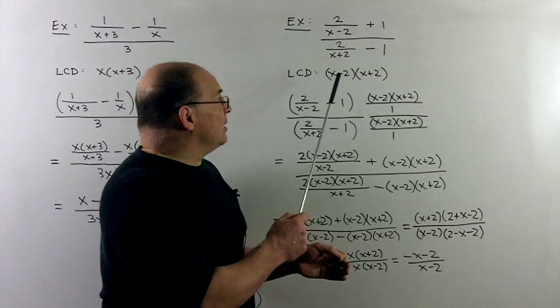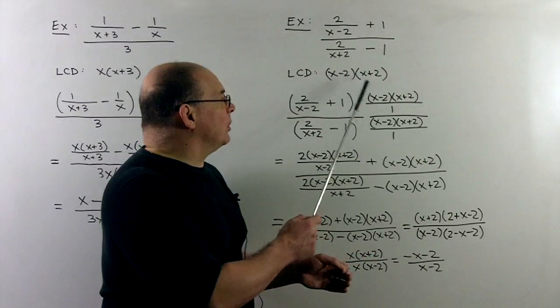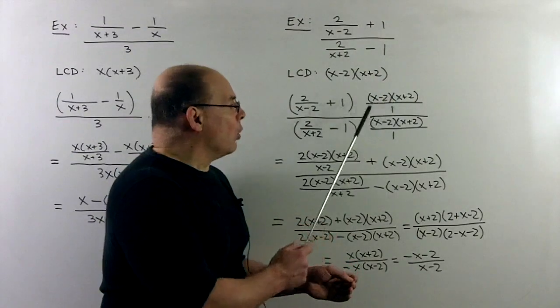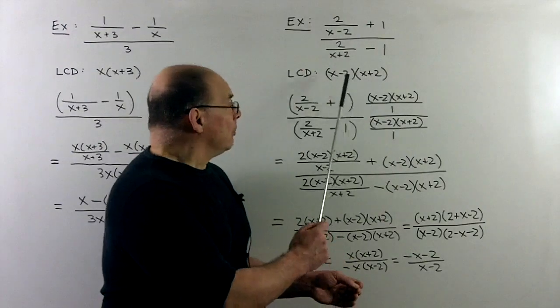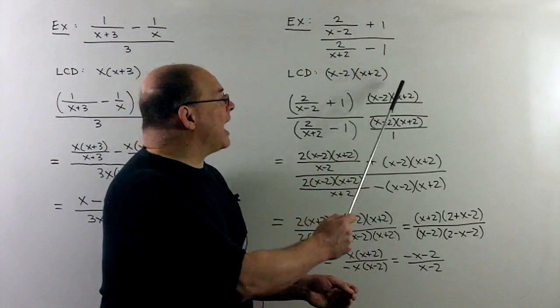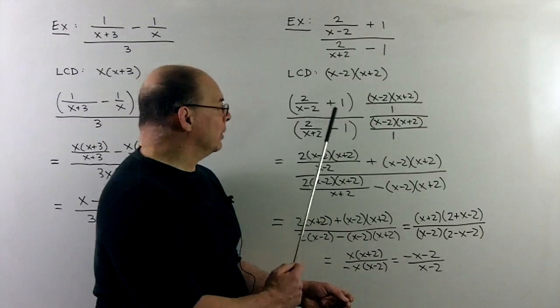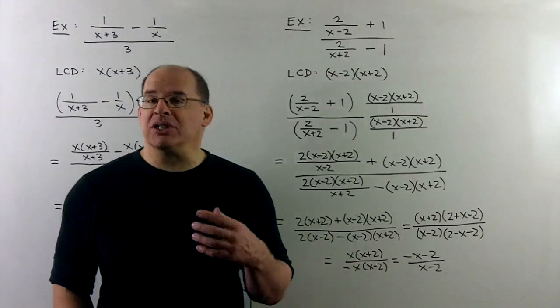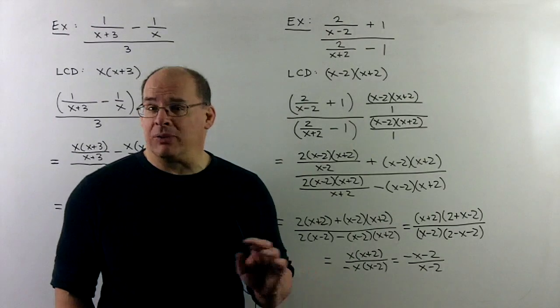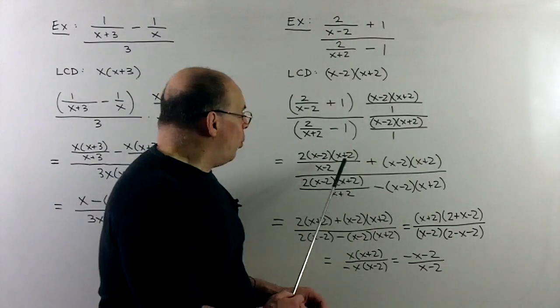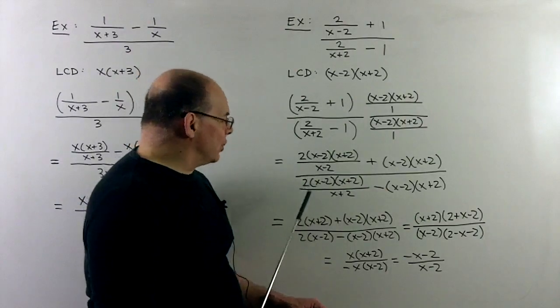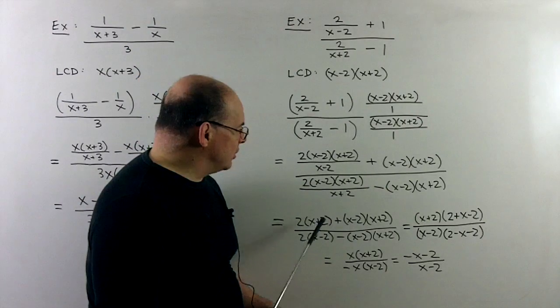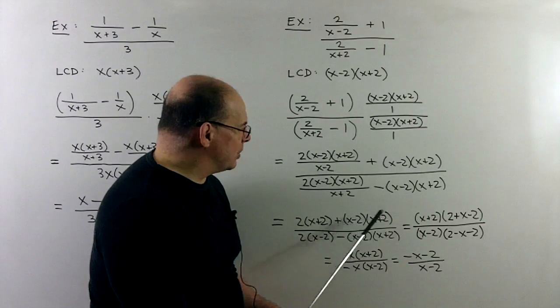Here, the LCD is going to be x minus 2 times x plus 2. So I multiply by x minus 2, x plus 2 over 1 over itself. Parentheses around both the numerator and denominator now. And then we distribute. So when we hit the 1 and the minus 1, I could just leave the denominator out. We're going to get rid of that 1. When the denominators clear on the other terms, we'll be left with 2 times x plus 2, plus x minus 2 times x plus 2.